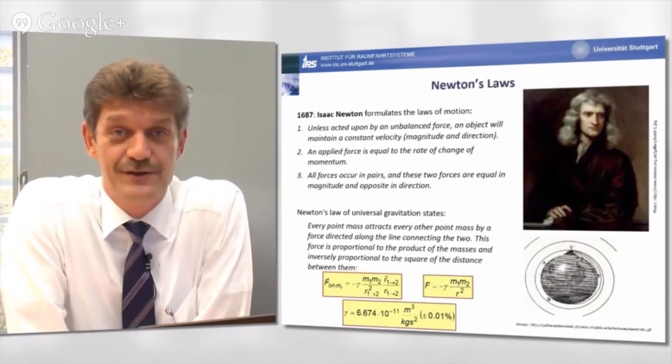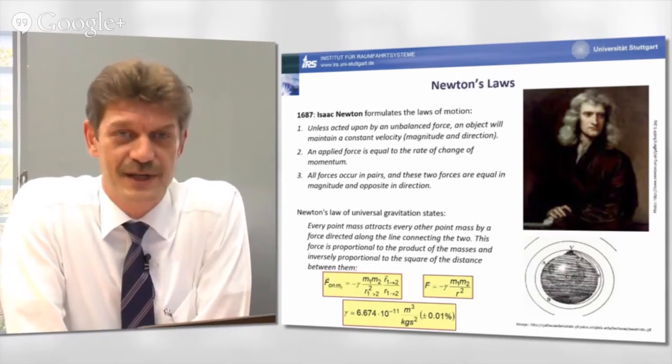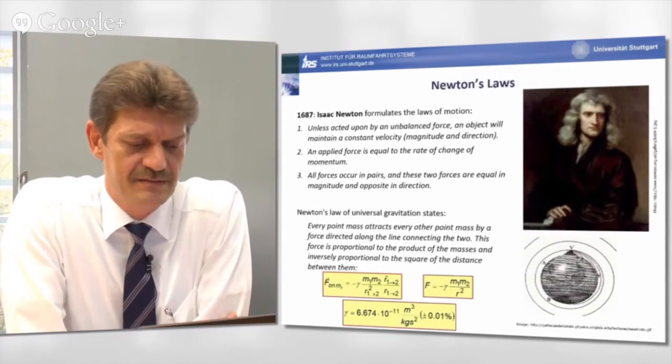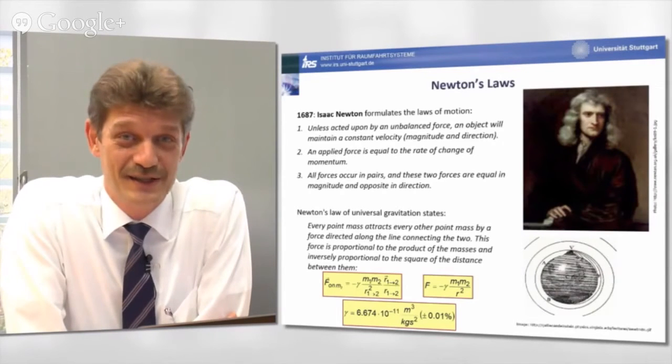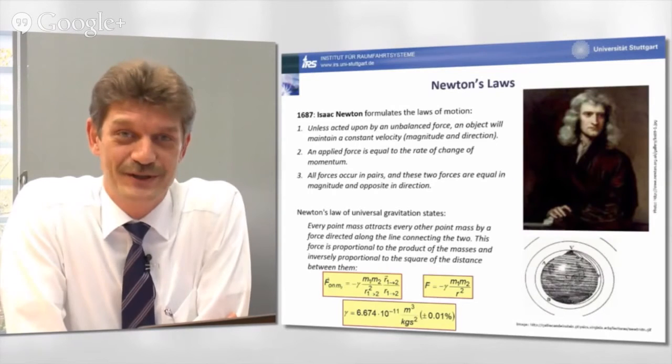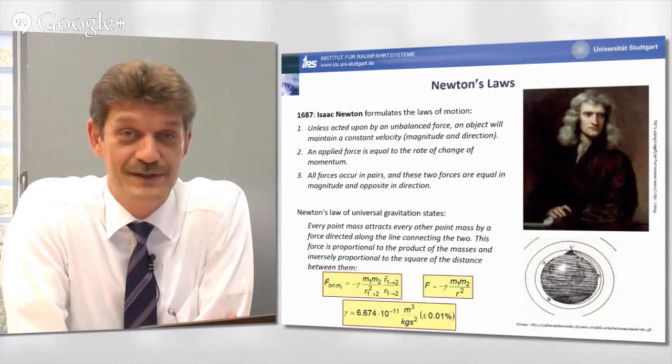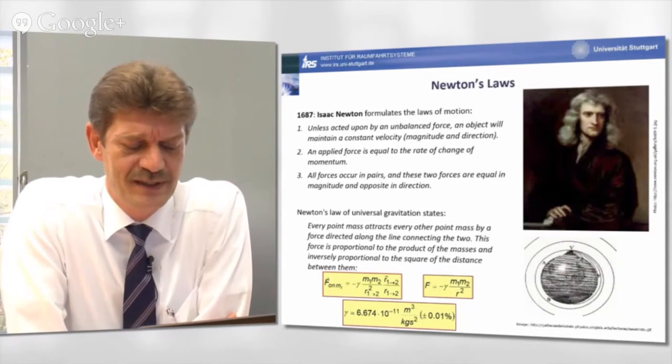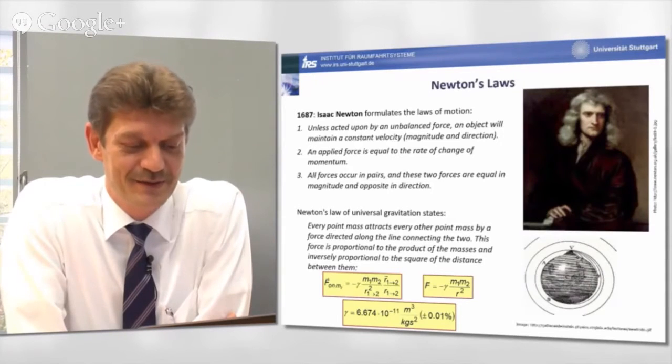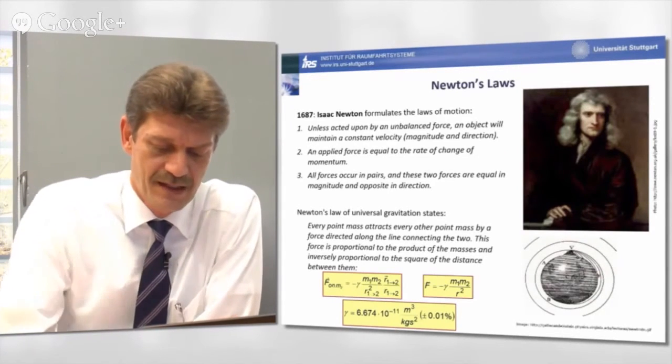He had a rough estimation about the order of magnitude. It was a good estimation, by the way. The best known value today is stated here, and it may be interesting to note that this is one natural constant from which we are quite uncertain about the accuracy. You see the accuracy here given with plus minus 0.01%. Indeed, we do know better about the mass of an electron or proton than from this universal gravitational constant.